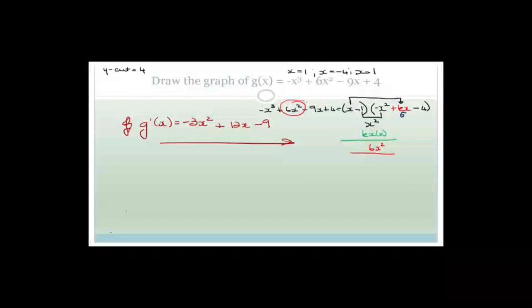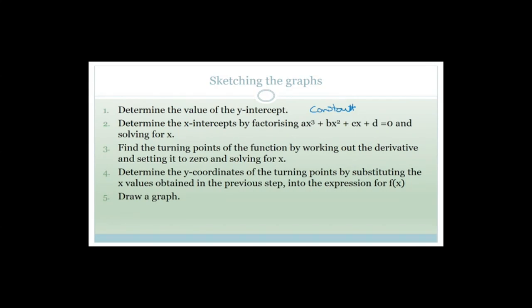Today we were looking at how to draw a graph. Before we carry on, I just want to remind you of where we were. So first of all, we're looking at sketching graphs. We said we're going to determine the value of the y-intercept, which is very easy — we just look at the constant. Then determine the x-intercept by factorizing your polynomial, and we would use the factor theorem to do that. Remember, we've already covered that.